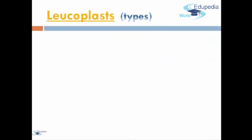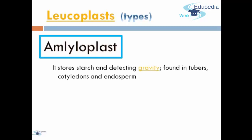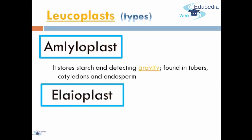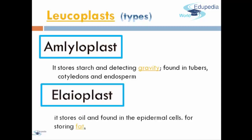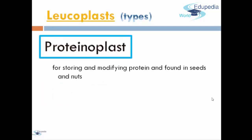Leukoplasts also have types. The first type is Amyloplasts. Amyloplasts stores starch and detecting gravity, formed in tubers, cotyledons, and endosperm. The second type is Elaioplasts. Elaioplasts stores oil and is found in the epidermal cells for storing fat. The next type is Proteinoplasts, which is for storing and modifying protein, found in seeds and nuts.